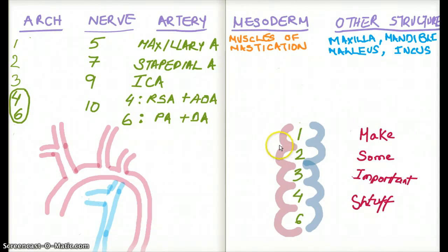Structures which come from the cleft or the pouch do not get the same structures as the brachial arch. They are all different. Different structures come from the arch, different structures come from the pouch, and different structures come from the cleft. Keep that in mind.